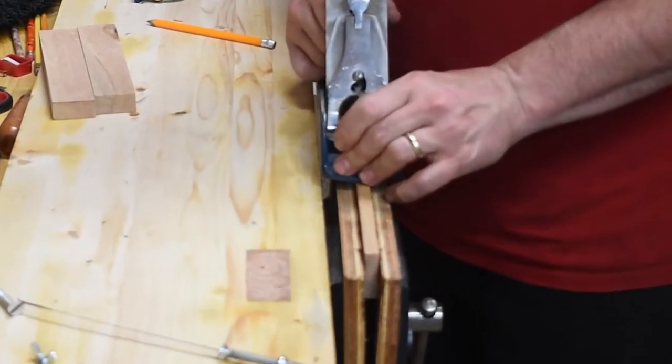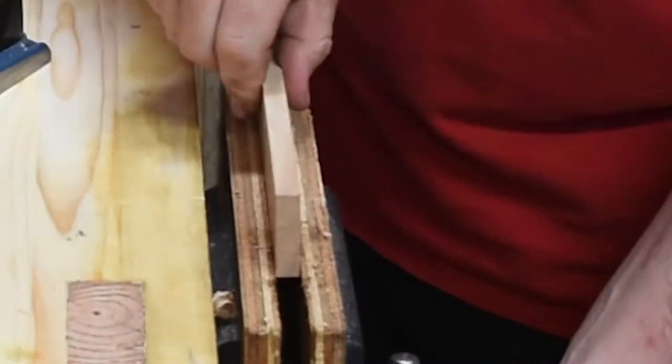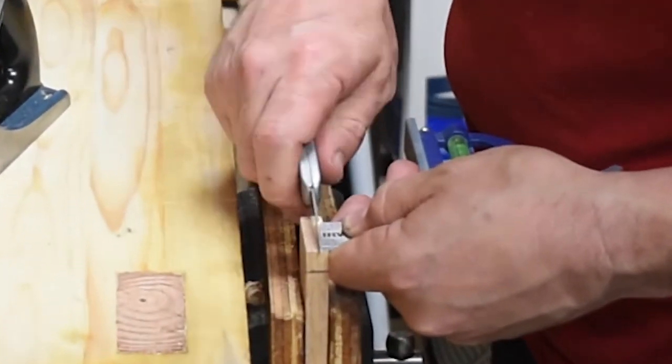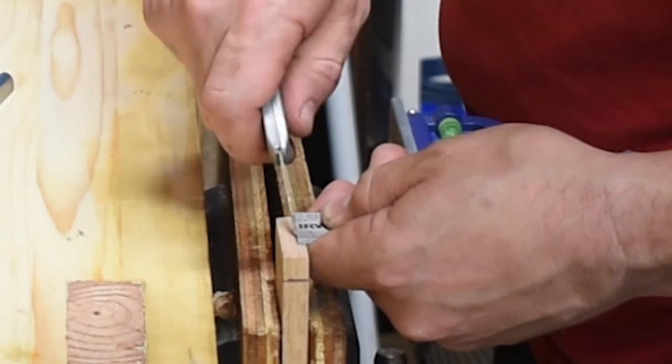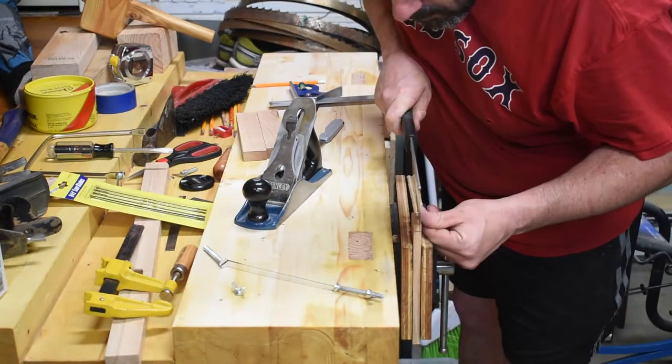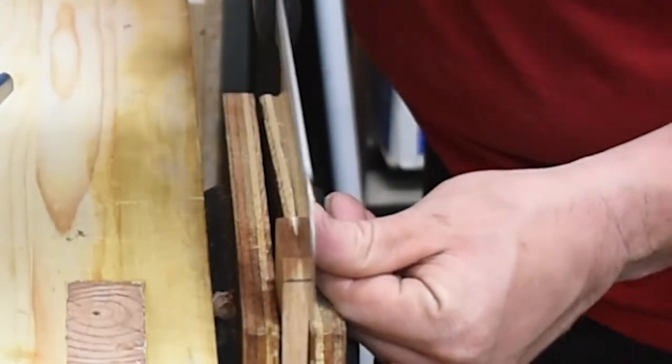So here with the hand plane I'm just flattening, smoothing and squaring up the edges of the center support piece. Next I am using a marking knife to cut marks into the ends of the center support piece for cutting the tenon that will fit into the mortise in the side pieces for the frame of the saw.